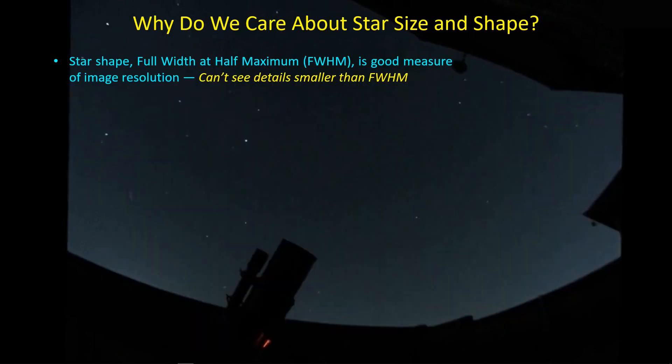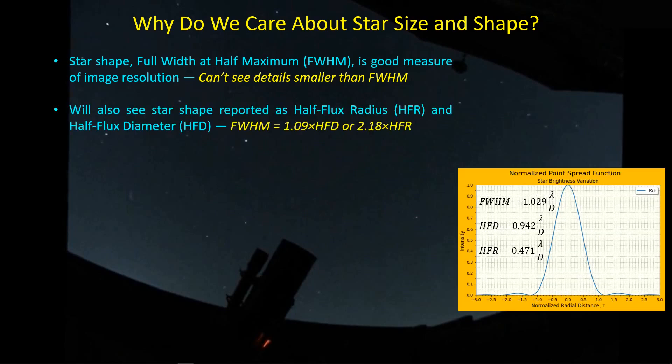Why do we care about star size and shape? Star shape characterizes the full width at half maximum — a diameter, if you will — and is a good measure of image resolution. If there is some feature, a dust lane for example, that has a width smaller than the full width at half maximum, then you have no hope of being able to resolve it with your telescope. Full width at half maximum isn't the only measure of the size of a star. Some programs will report results in terms of half flux radius and half flux diameter, and I cover the meaning of half flux diameter and how it compares to full width at half maximum in a separate video linked in the description.